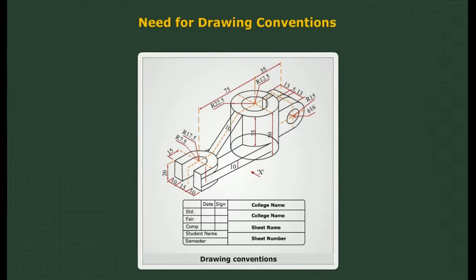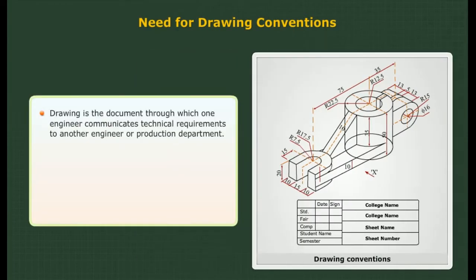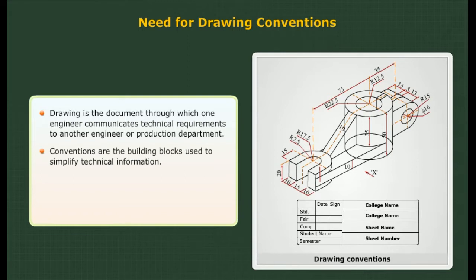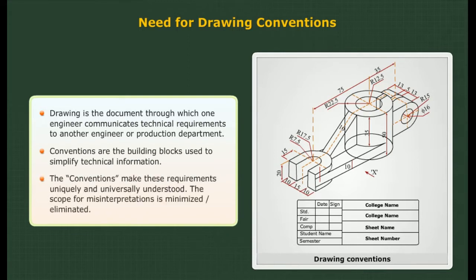Need for drawing conventions: Drawing is the document through which one engineer communicates technical requirements to another engineer or production department. Conventions are the building blocks used to simplify technical information. The conventions make these requirements uniquely and universally understood. In other words, the scope for misinterpretations is minimized or eliminated.